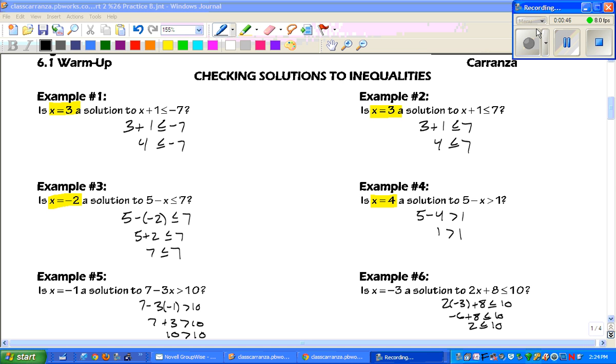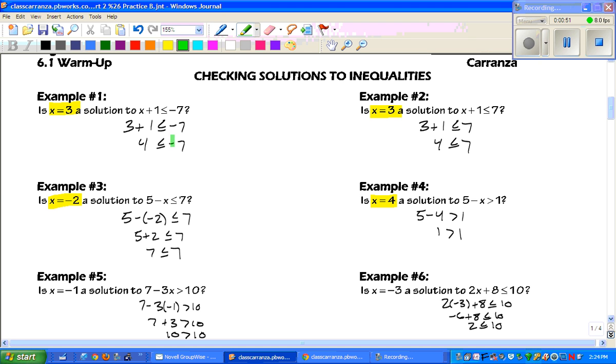I went through and did the work and now we're going to answer the questions together. Number one, you get 4 is less than or equal to negative 7. Is that a true or a false statement? Hopefully you're saying false because that is not a solution. Four is not less than negative seven.